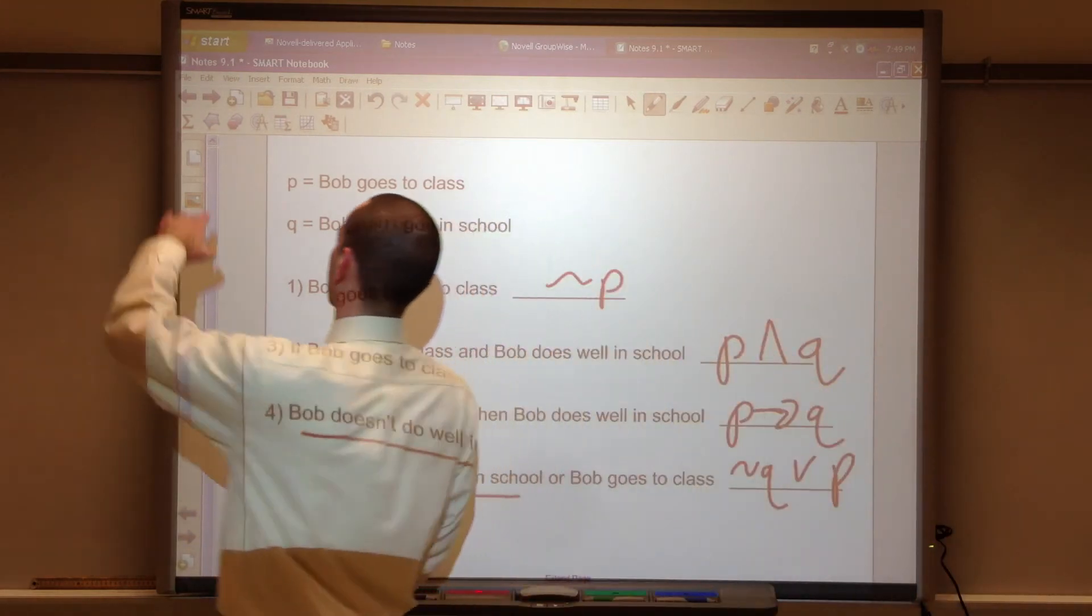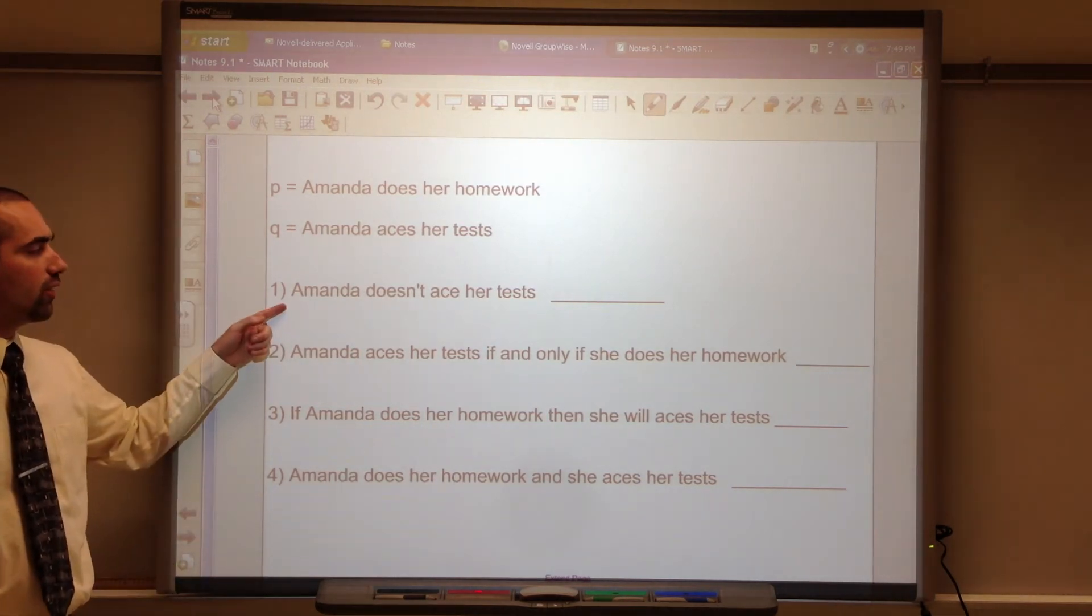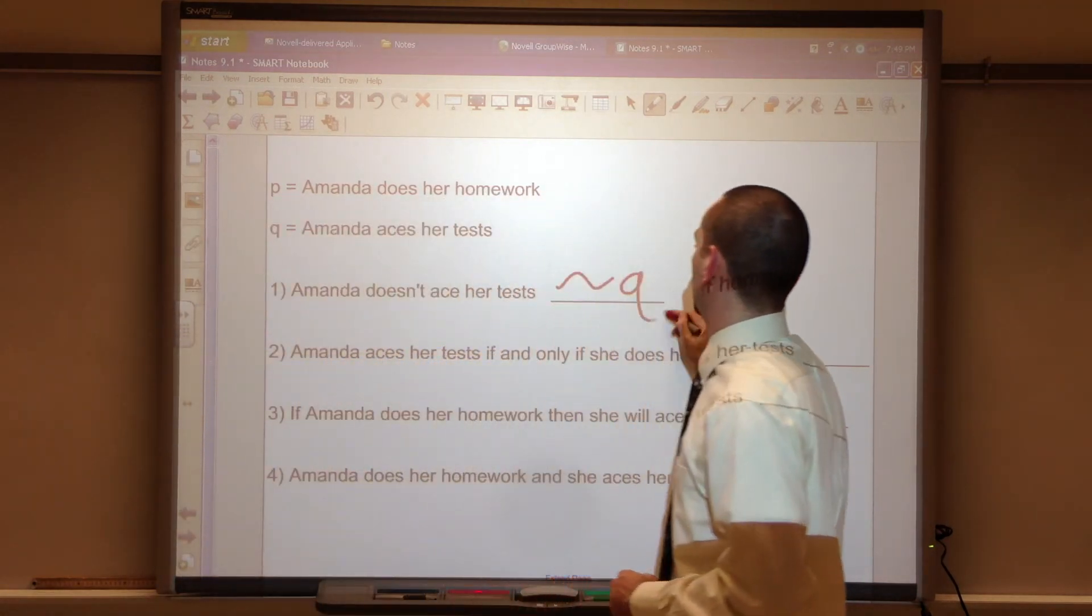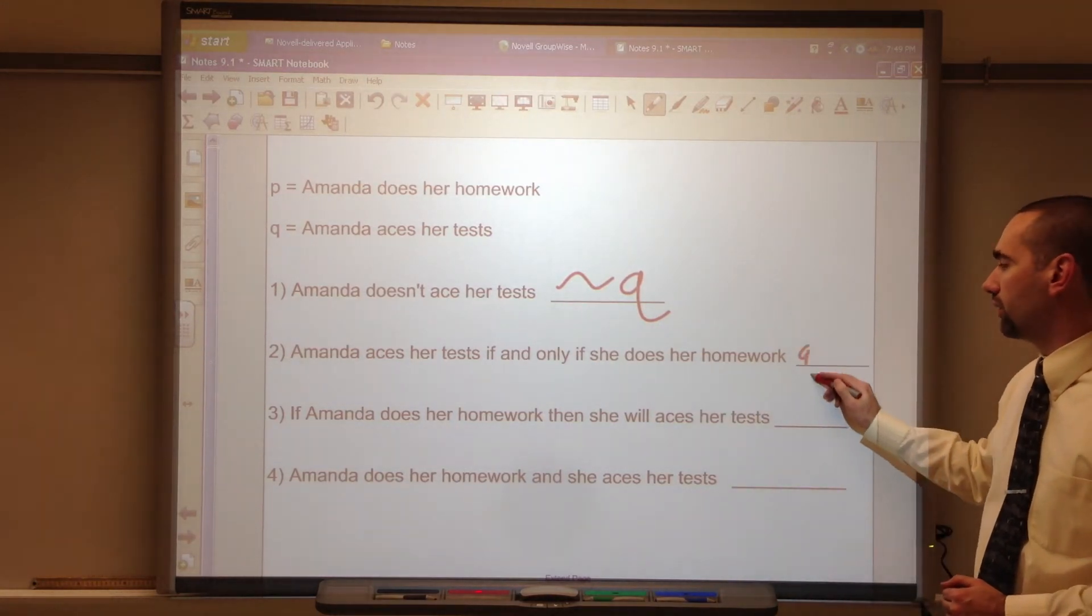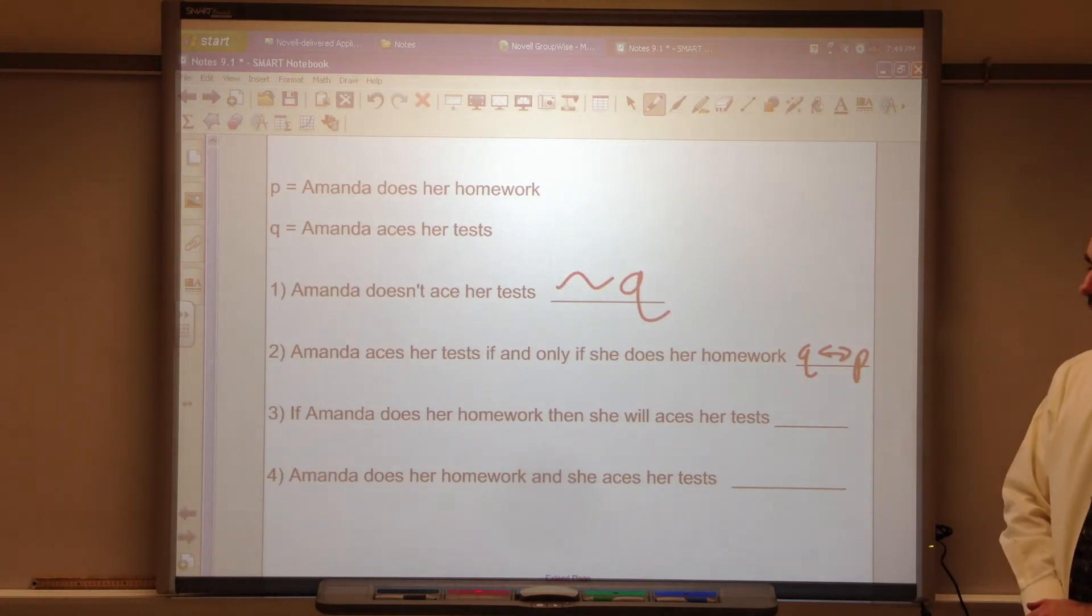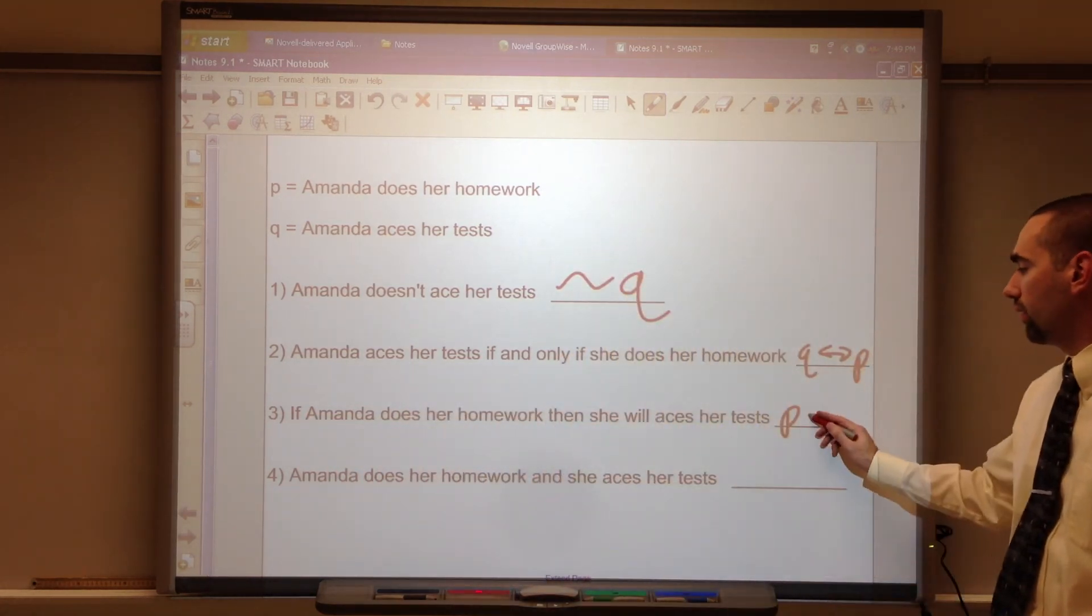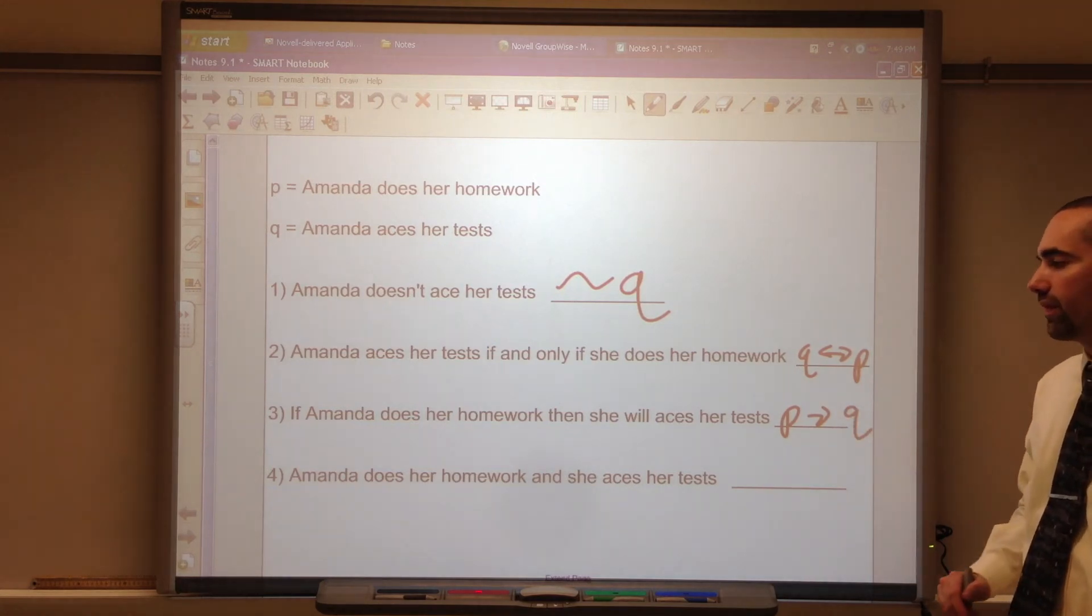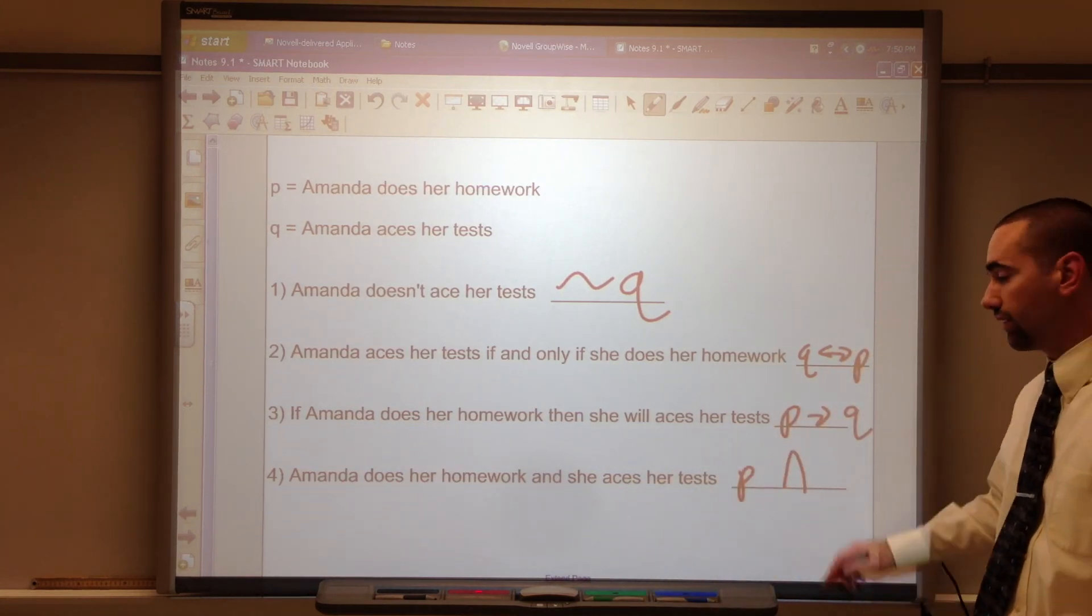Let's look at a couple other examples. P, Amanda does her homework. Q, Amanda aces her test. Amanda doesn't ace her test. That's Q with a not. Not Q. Amanda aces her test if and only if she does her homework. So Q is bi-conditional on P. Q if and only if P. Amanda does her homework, that's P. Now notice if then, so implies. If she does her homework, that implies she aces her test, which is Q. Amanda does her homework, P, and she aces her test, Q.